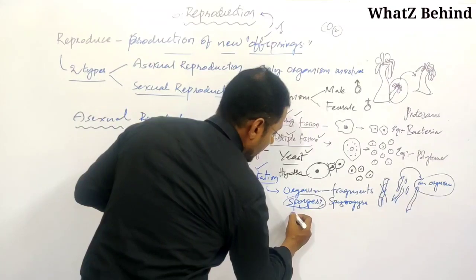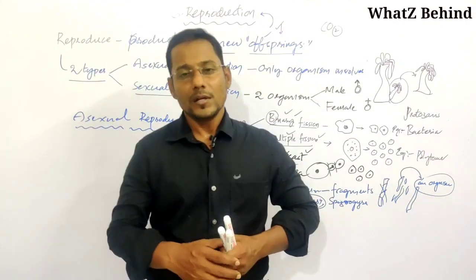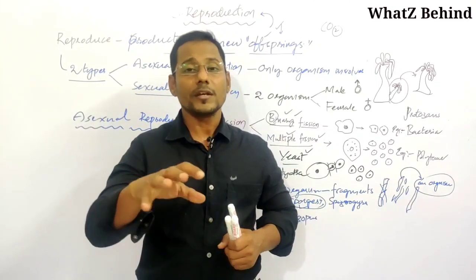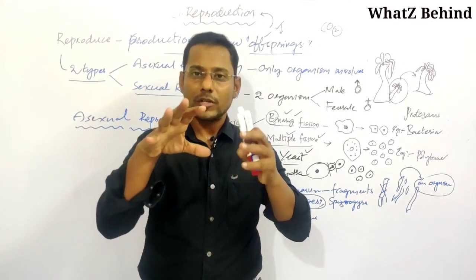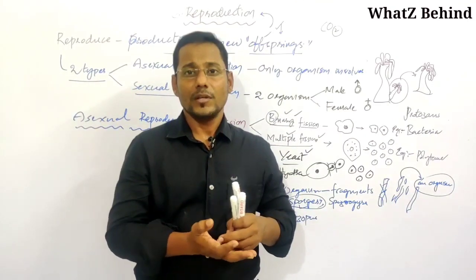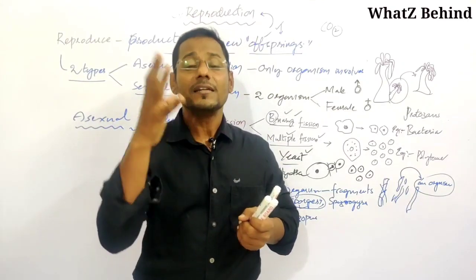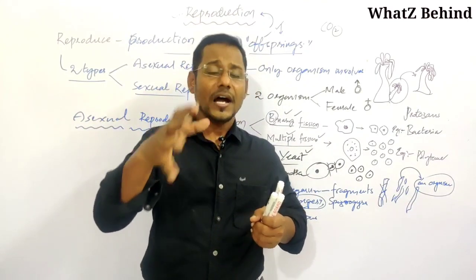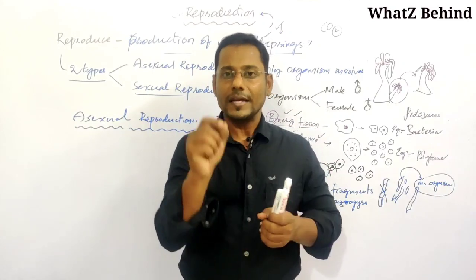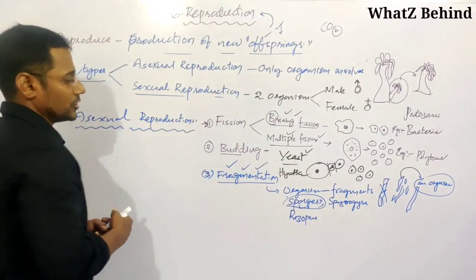Fragmentation can also be seen in rhizopus, also called bread mold. This is a kind of fungi that grows on the surface of vegetables or bread. Its structure consists of very minute thread-like structures called hyphae, which cannot be seen without a microscope. If these hyphae are accidentally broken, each piece becomes a new mycelium. This is a kind of asexual reproduction — fragmentation.